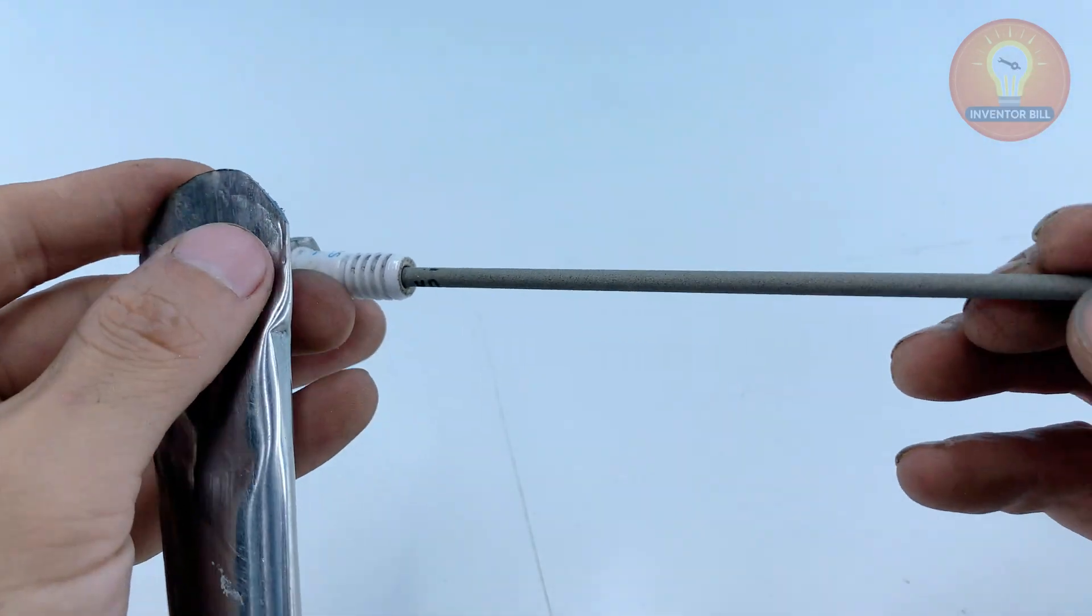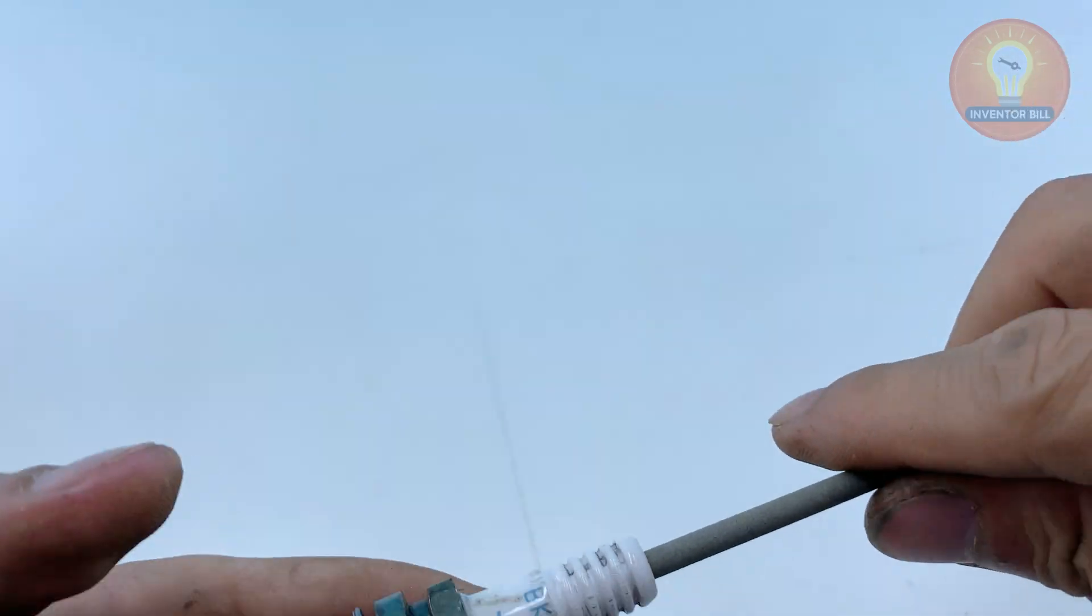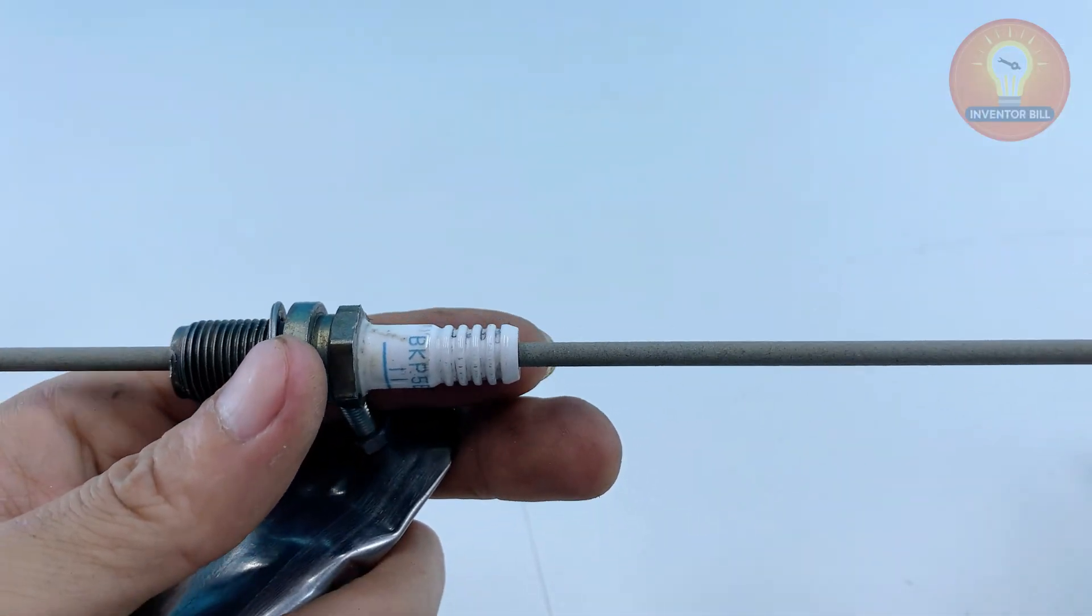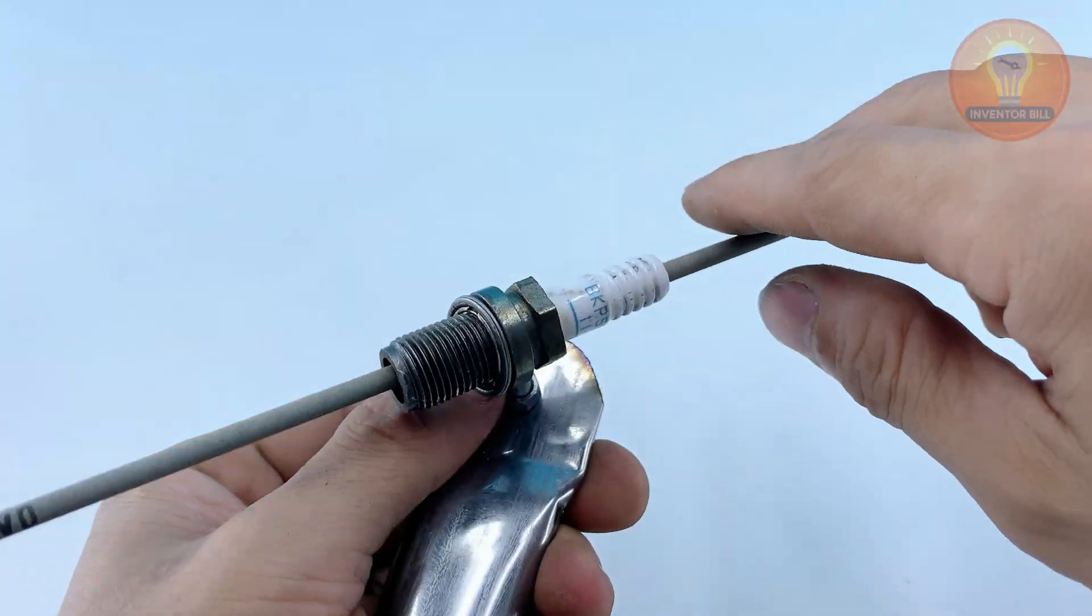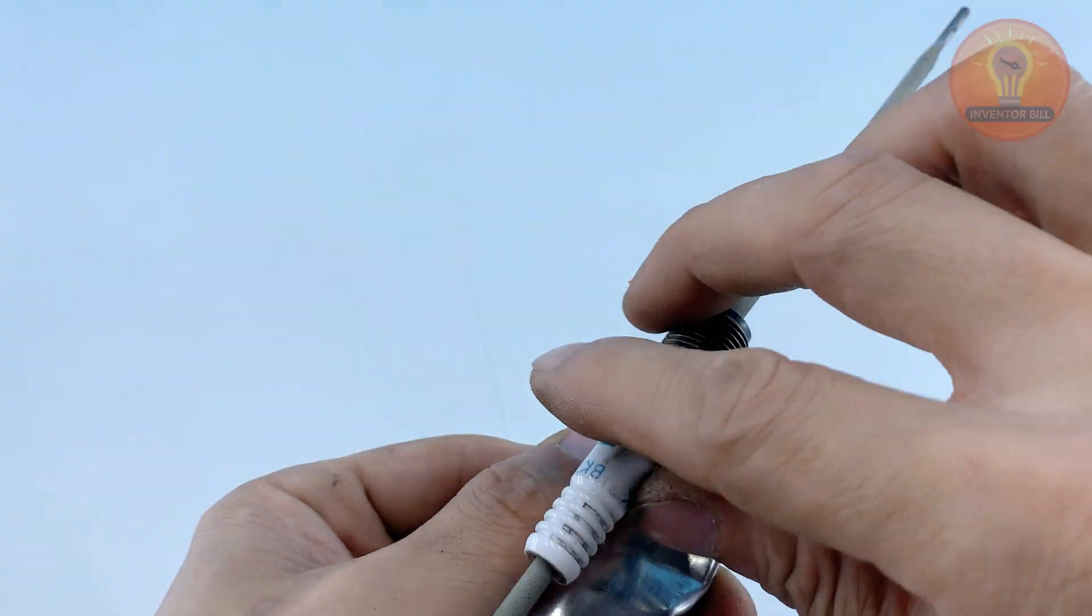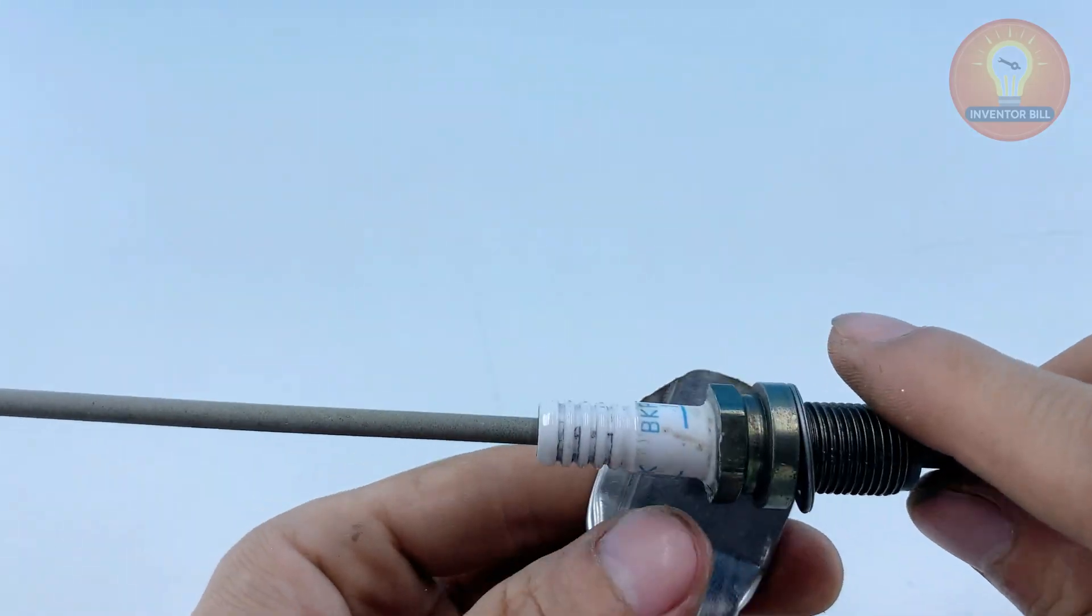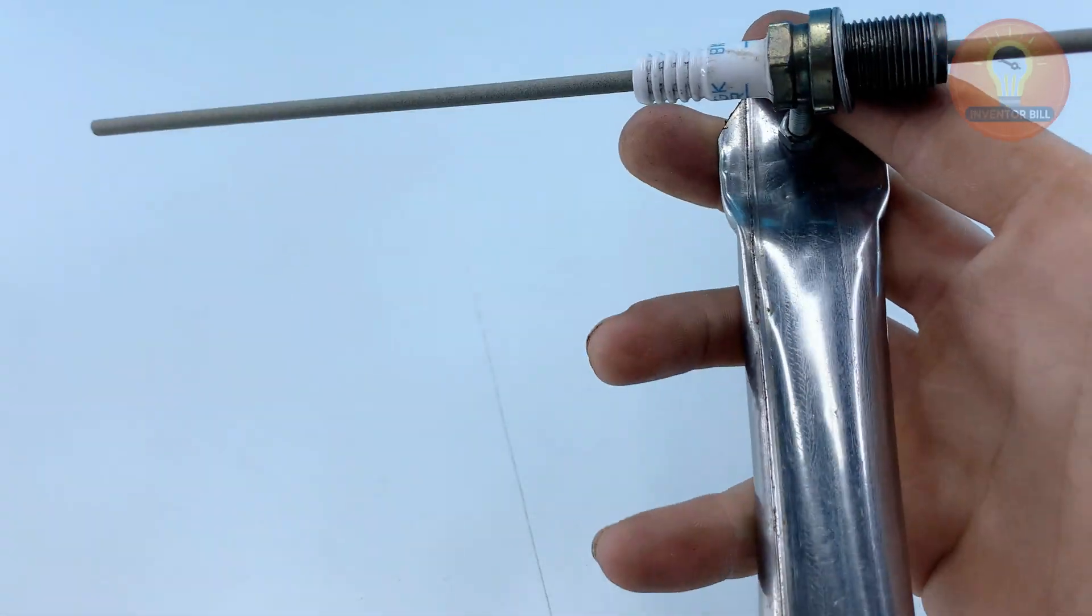Once that's done, take a welding rod and slide it through the hole in the ceramic core. It should pass smoothly from one end to the other without wobbling. That's it, you've just built a simple insulated handle that can hold a welding rod securely. It's compact, sturdy, and completely homemade, ready to connect to power and start welding.